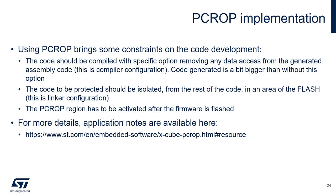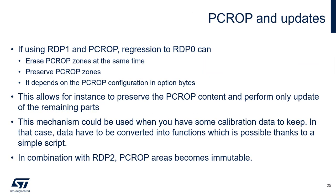The PCROP region must be activated only after the firmware is programmed to flash. For more details, you can find an application note about PCROP at the provided link. If using RDP level 1 and PCROP, when performing a regression to RDP level 0, you have the choice to keep the PCROP zones or to have them erased at the same time, depending on the PCROP configuration in the option bytes. This allows, for instance, preserving the PCROP content and performing only an update of the remaining parts — useful when you have calibration data to keep, where the data must be converted into instructions using a simple script.